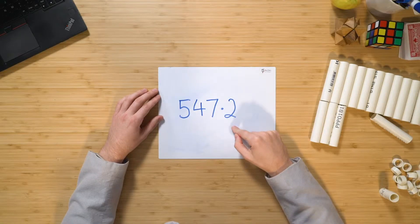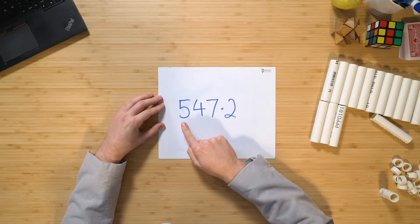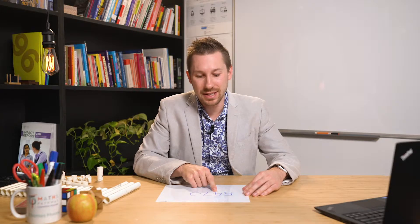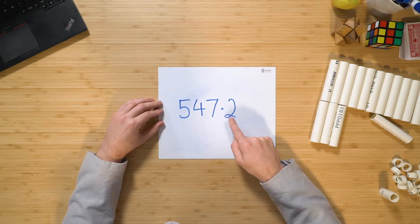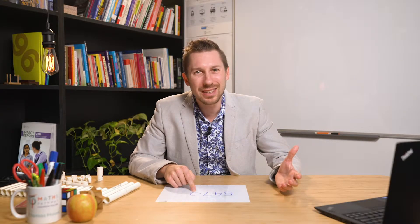Now I have the same number written here as what I did before. But let's read it out. We have 500, 40, seven, and if we said point two, what does the two actually represent? Well, it's two tenths, isn't it?